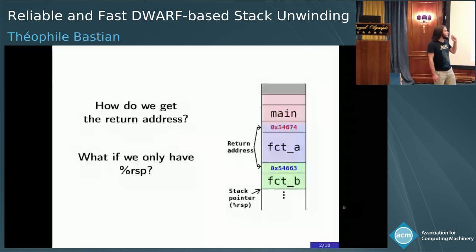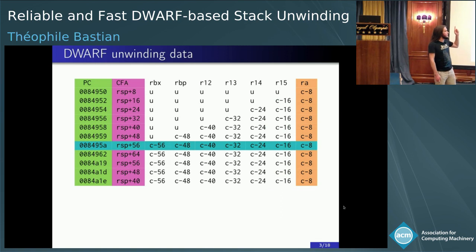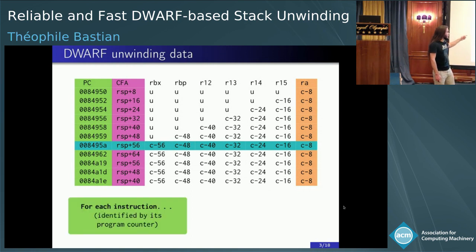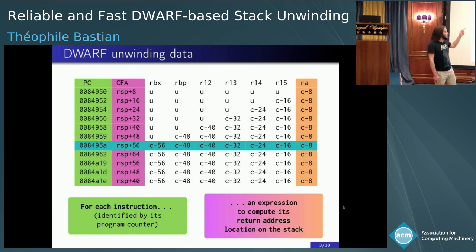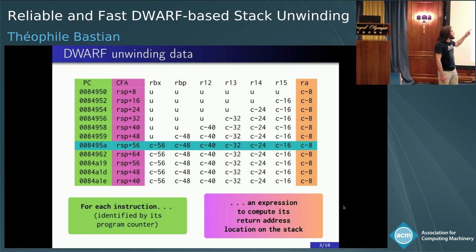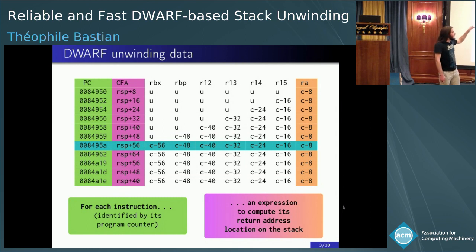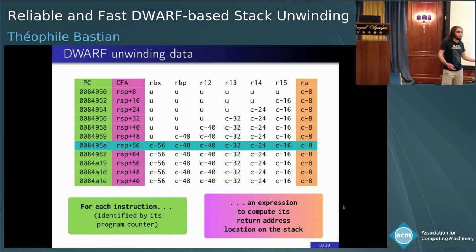You definitely need more data to do that. This data is the DWARF debug data — more specifically, the DWARF unwinding data. It takes the form of a big array, indexed by the program counter, and for each instruction it maps to some expression that tells you how to compute the return address location on the stack. You have a frame address, which is just a matter of relative addresses, and the return address relative to that. Problem solved — we know how to compute the base address and can retrieve the return address.